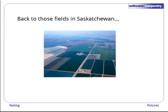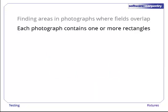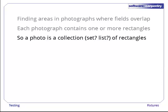Let's go back to the fields of Saskatchewan. We're trying to find places where photographs of those fields overlap. Each photograph contains one or more rectangles. In programming terms, this means that a photo is a collection of rectangles such as a set or a list. What we really want to do is find all the overlaps between the rectangles in two collections.